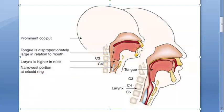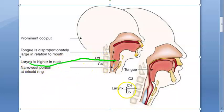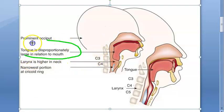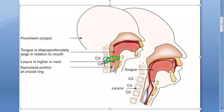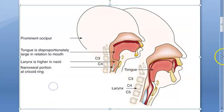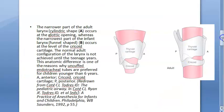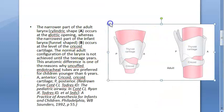In this image, you can see C3 marked here — the larynx is higher in the neck in the infant, shown between C3 and C4, while in the adult it is between C4 and C5. The tongue will be very large in a baby, and the larynx is small and conical. The narrowest portion is at the cricoid ring for an infant, which they are showing very nicely here.